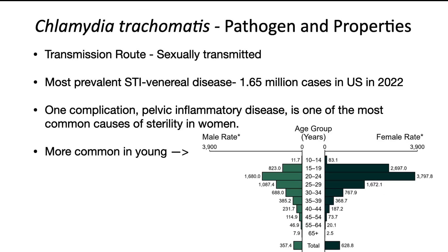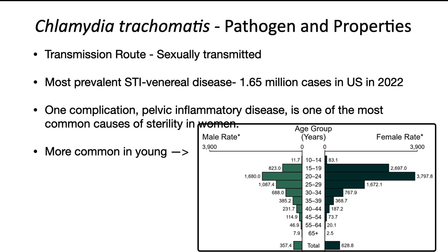Let's talk more specifically about Chlamydia trachomatis, which is the pathogen that causes the sexually transmitted disease. It is one of the most prevalent infections in the US. One major complication is pelvic inflammatory disease, which is one of the most common causes of sterility in women. The bacterium can also cause eye infections, respiratory disease, and joint infections. The rate of STI with chlamydia per 100,000 individuals shows that adults from 15 to 30 account for the vast majority of cases, though there is some incidence in all age groups.